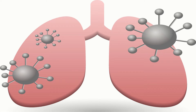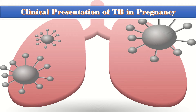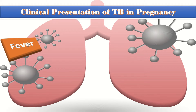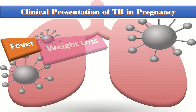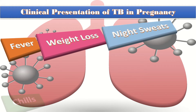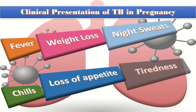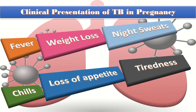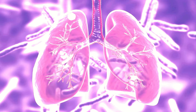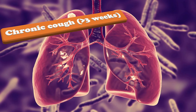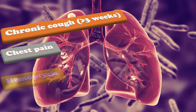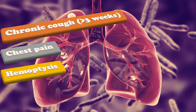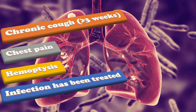Among the clinical presentations of tuberculosis, except for fever, symptoms are similar to those in non-pregnant women, including weight loss, night sweats, chills, loss of appetite, tiredness, and weakness — which may be harder to identify as pathological in pregnancy. As the lungs are commonly infected, chronic cough of more than three weeks, chest pain, or hemoptysis may be the presenting features. The primary physician may have attempted to treat the infection with antibiotics prior to presentation.